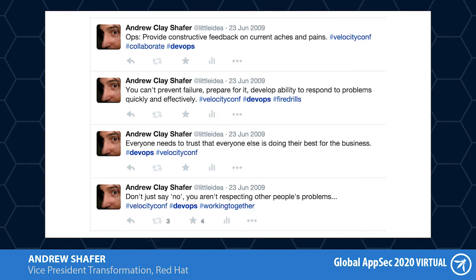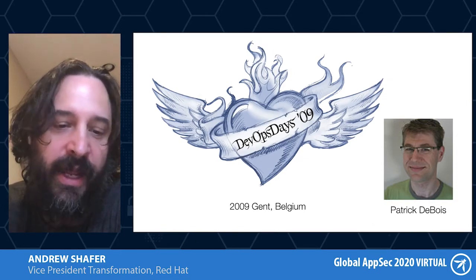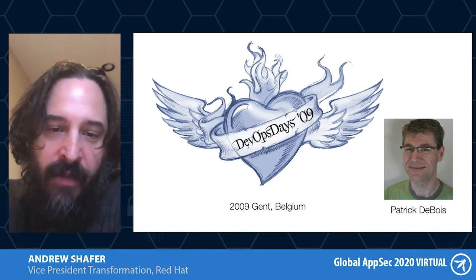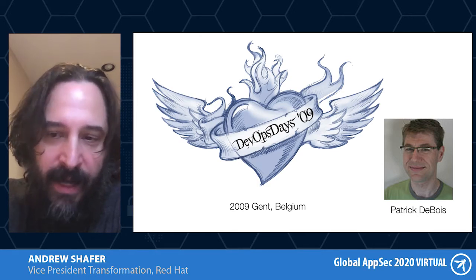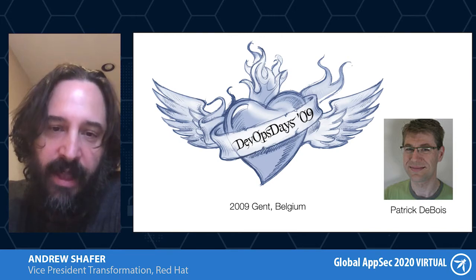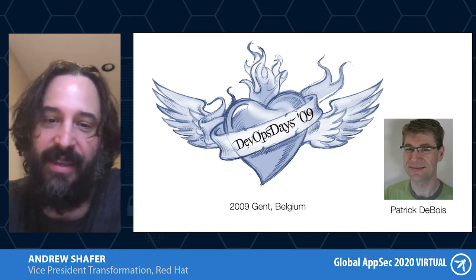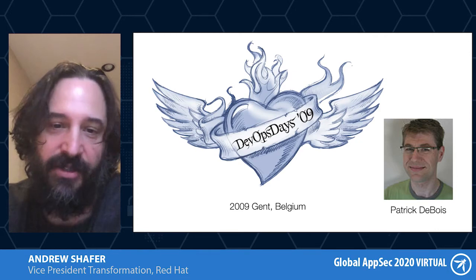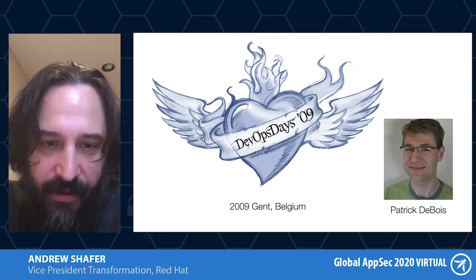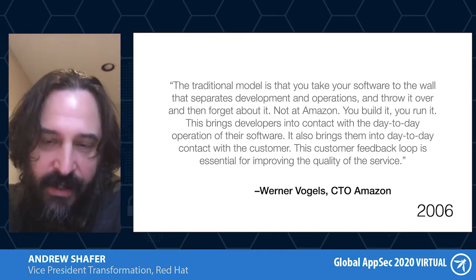I'd already been conspiring with Patrick Dubois, who I'd met in 2008 at the Agile conference in Toronto. We were planning to do a conference focused on agile infrastructure — trying to bring agile software development practices to infrastructure. He was watching the tweet stream from Velocity and said, 'We're going to call it DevOps Days.' That's kind of the first use of that term, and the gestalt created from DevOps Days and the community of practice that grew out of it is where we get the buzzword du jour. But that was 2009, and this next reference is from 2006.